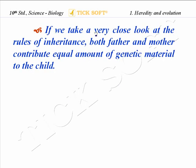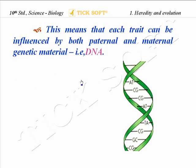If we take a very close look at the rules of inheritance, both father and mother contribute an equal amount of genetic material to the child. This means that each trait can be influenced by both paternal and maternal genetic material — that is, DNA.